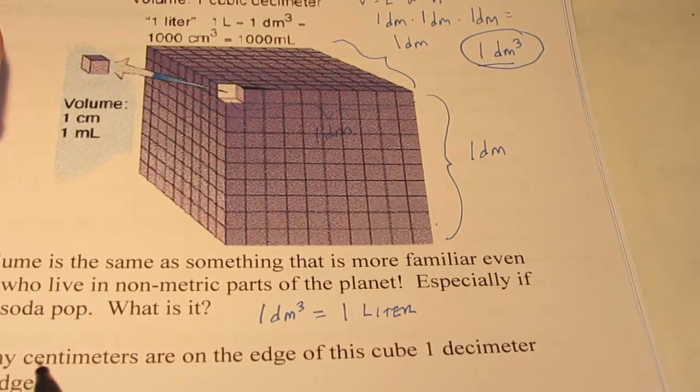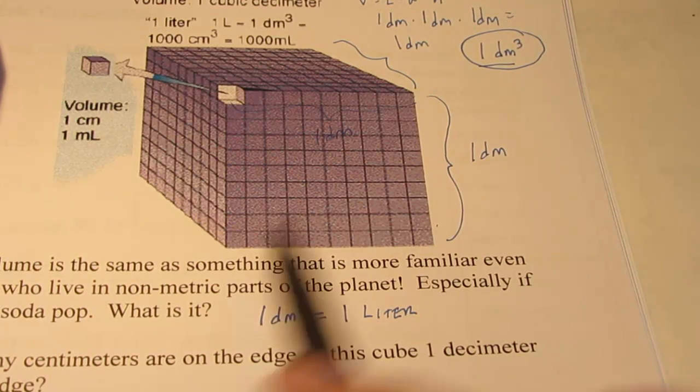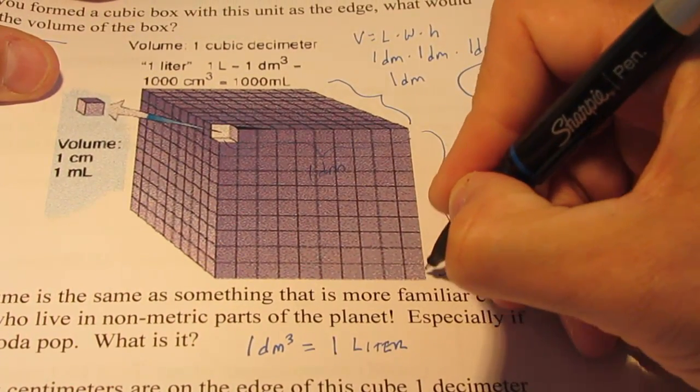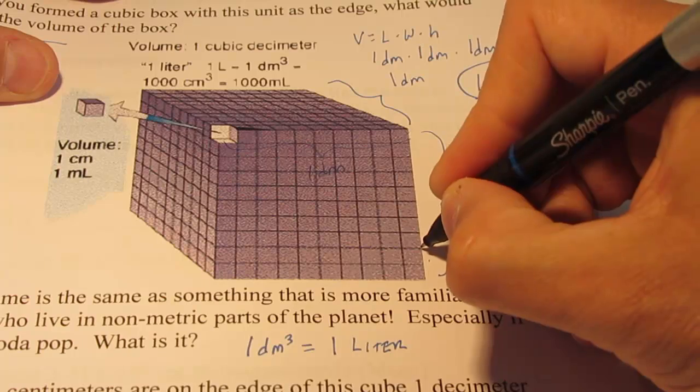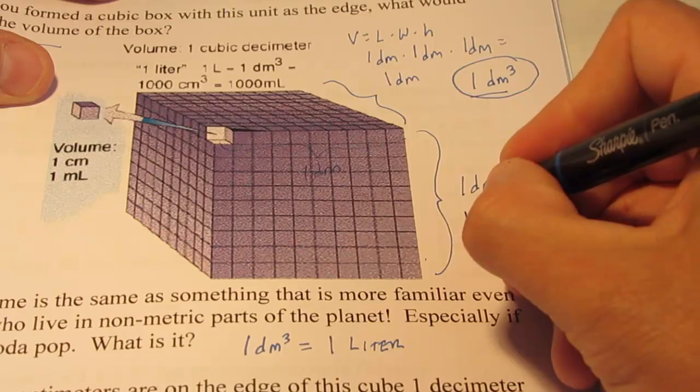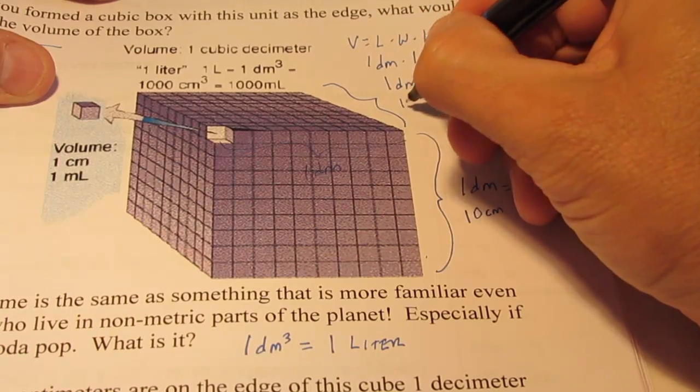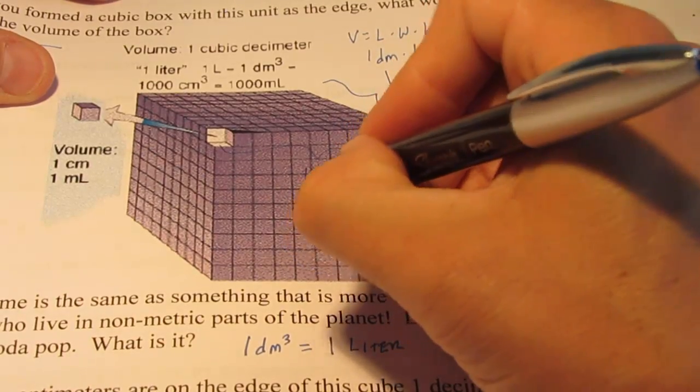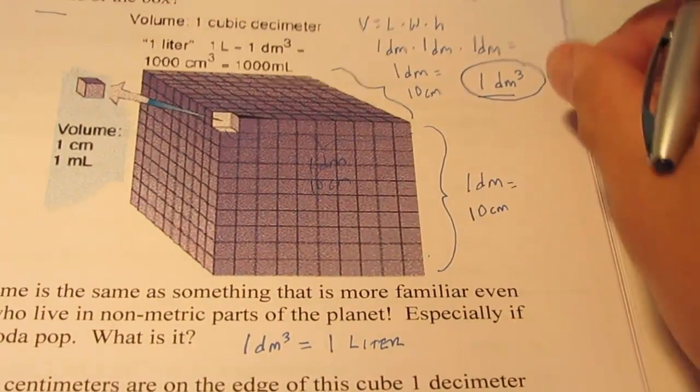Now think about this. How many centimeters are on the edge of this cube that is one decimeter on each edge? Well, I've drawn it out for you. If this is one decimeter, each one of these cubes here inside of it has a length of one centimeter. So one, two, three, four, five, six, seven, eight, nine. Well, that's the same as ten centimeters. So each cube, or each edge of this cube that's one decimeter long could also be written as ten centimeters long on each edge. So we have ten by ten by ten.